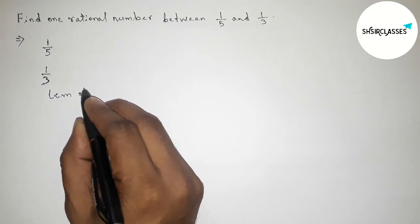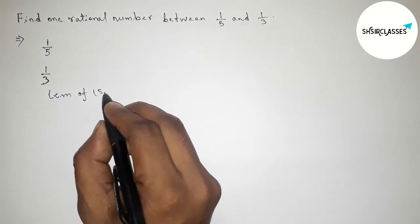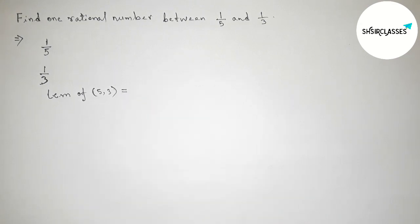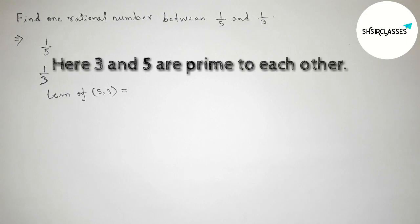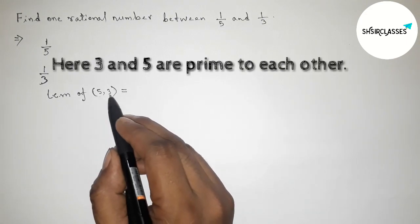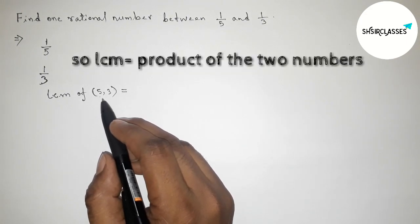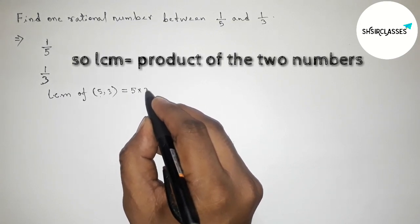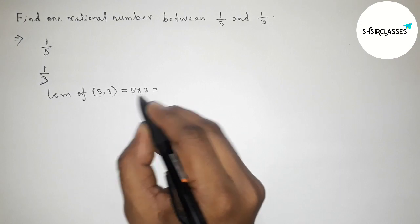So here first we have to find LCM of 5,3. Finding LCM of 5,3 - here the two numbers 5 and 3 are prime to each other, so the LCM will be product of the two numbers. So 5 into 3, that is 15.